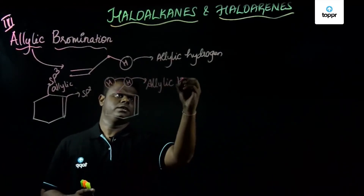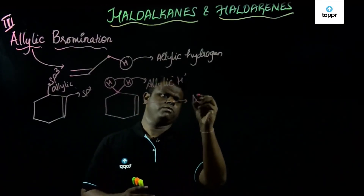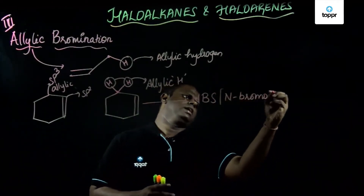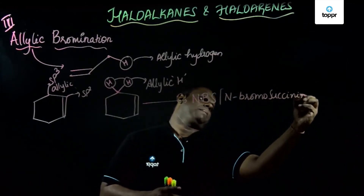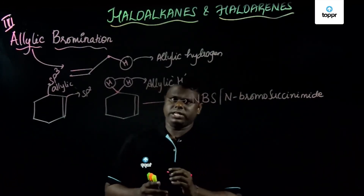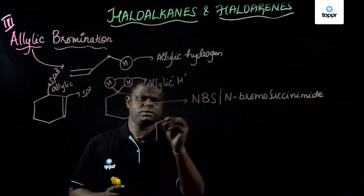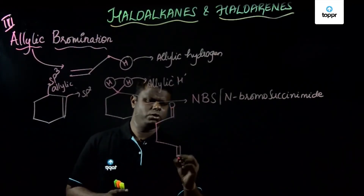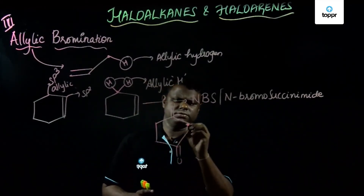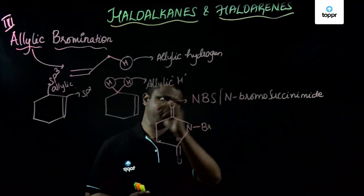Now we are going to study allylic bromination using a very important reagent. We are going to use NBS, which is N-bromo succinamide. Succinic acid is a dicarboxylic acid, and its imide is succinamide. The structure has a double bond O, double bond O, CH2, COOH, CH2, COOH — this is succinic acid. We react it with a base and replace the hydrogen with bromine to get N-bromo succinamide.